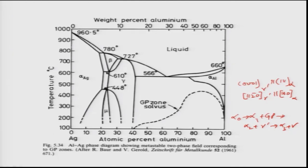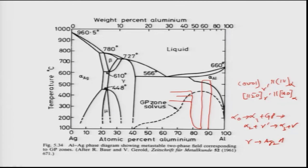Silver is expensive, so Al-Ag alloys are not widely used. However, the solvus can extend up to 550 degrees Celsius, making these alloys usable at slightly higher temperatures than Al-Cu alloys. The final equilibrium precipitate is Ag₂Al, plate-shaped — similar in morphology to Al₂Cu — and the overall precipitation hardening behavior is analogous.